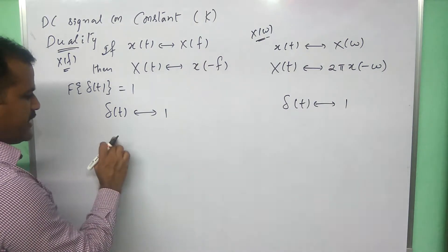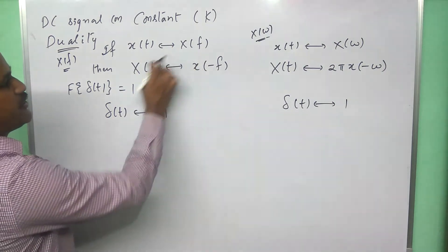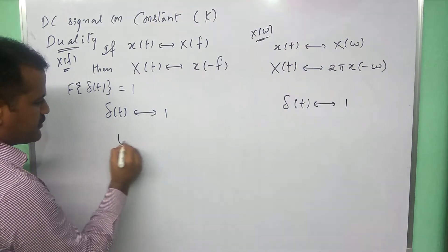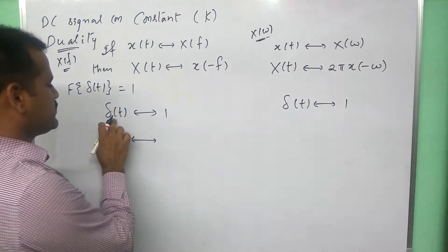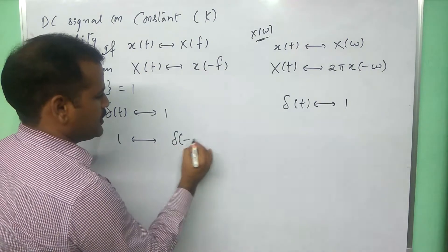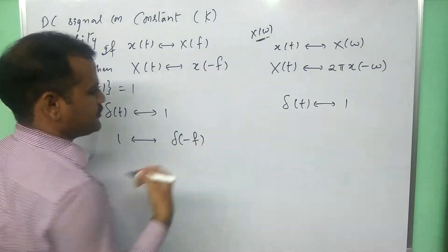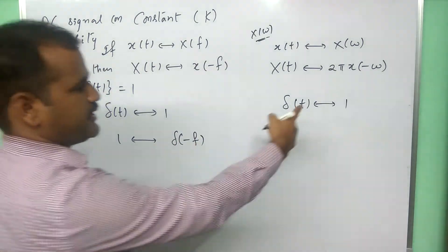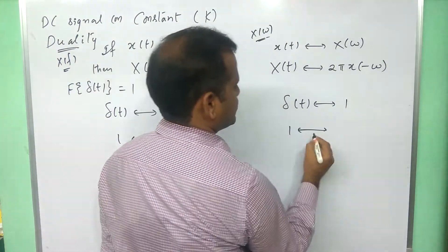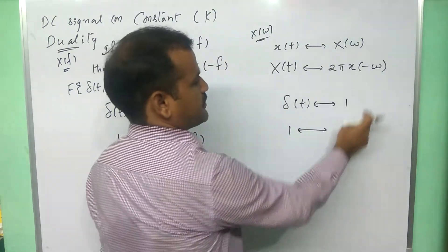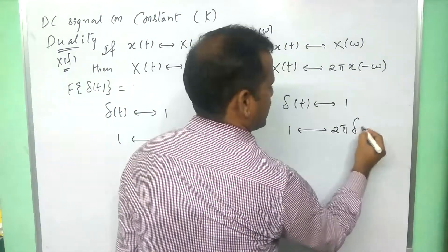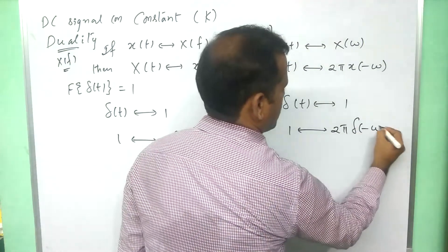So, if I take 1 to this side, that means according to the duality property we are exchanging the signals. So, 1 taken to this side means obviously this delta function goes to that side with reflection, giving delta of minus f. Similarly, in X of omega analysis, if I take 1 to this side, delta of t goes to that side with reflection and is multiplied by 2 pi, giving 2 pi times delta of minus omega.